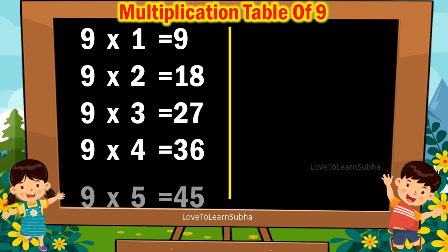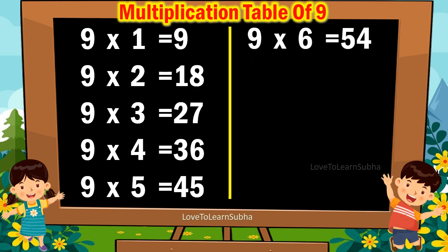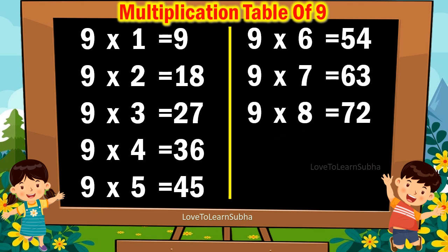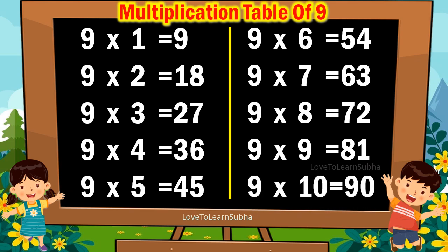9 5s are 45. 9 6s are 54. 9 7s are 63. 9 8s are 72. 9 9s are 81. 9 10s are 90.